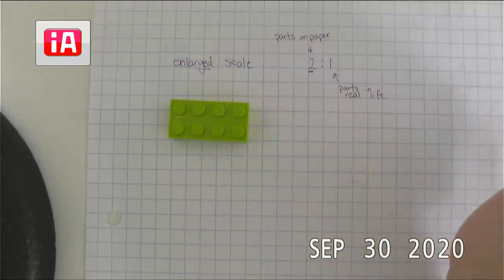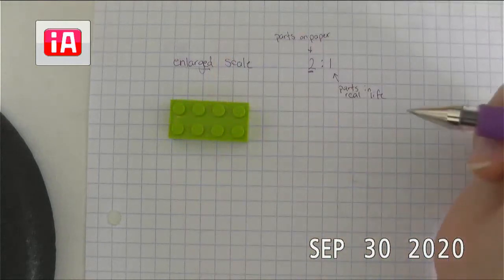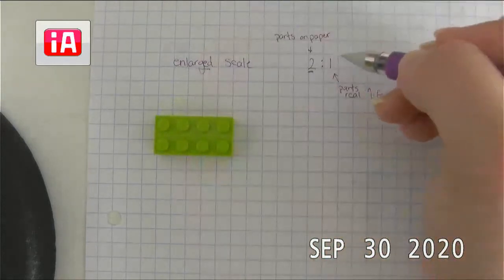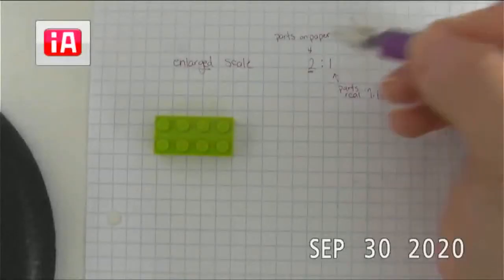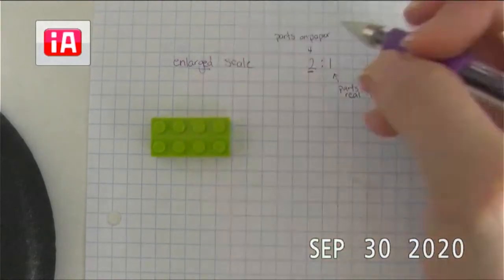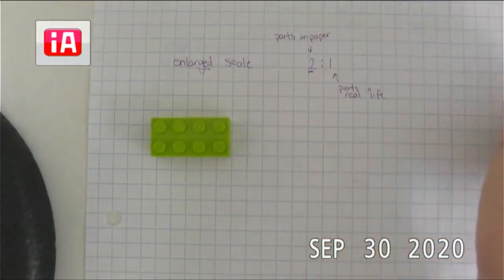So if we're doing this Lego right here and we are drawing it at an enlarged scale, we are going to make every real-life part represented by two parts on paper. So we are going to make this twice as big, essentially.